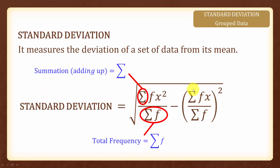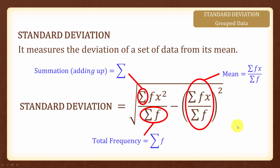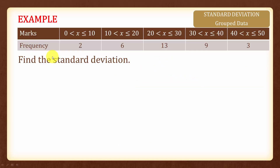The summation of fx over the summation of f is known as the mean. Therefore, the standard deviation measures the deviation of the data from its mean, giving us a more accurate measure of spread. Here we have an example showing grouped data: for marks between 0 and 10, we have a frequency of 2; for marks between 10 and 20, a frequency of 6, and so on. We are asked to find the standard deviation.